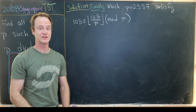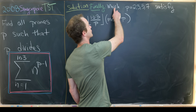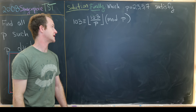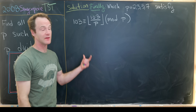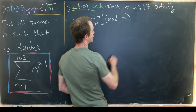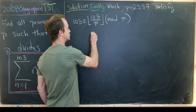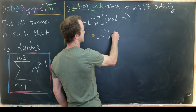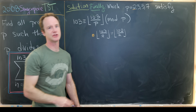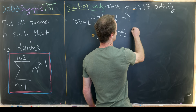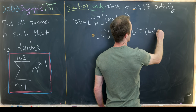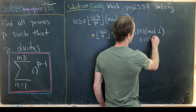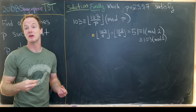Now we test each candidate in the congruence 103 ≡ floor(103/p) mod p. For p = 2: floor(103/2) = floor(51.5) = 51, which is congruent to 1 mod 2. And 103 is congruent to 1 mod 2. So p = 2 is a solution.